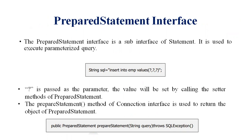The PreparedStatement interface is a sub-interface of the Statement interface. It is used to execute a parameterized query. For example, the SQL string for an insert into emp table uses question marks as placeholders — one question mark represents one value. So for three values, we use three question marks. The question mark is passed as a parameter, and the values will be set by calling the setter methods of the PreparedStatement.